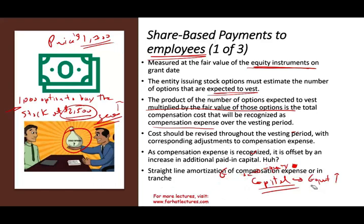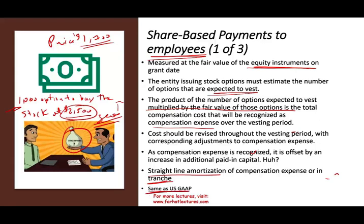How do you expense the options? You have two options: straight-line, or you can amortize the compensation expense in tranches — in pieces — same as US GAAP. Most of the time we use the straight-line method. If you need more about stock options, go to my Chapter 16 intermediate accounting for a comprehensive treatment of this topic.